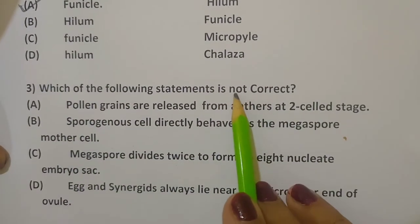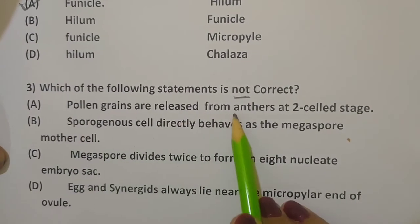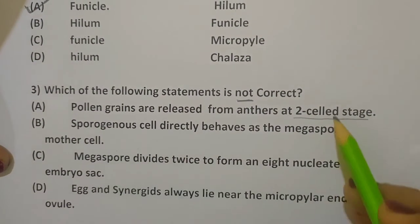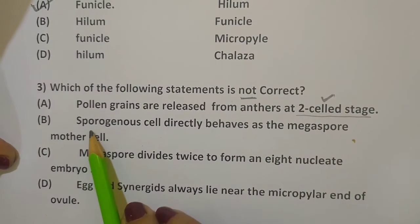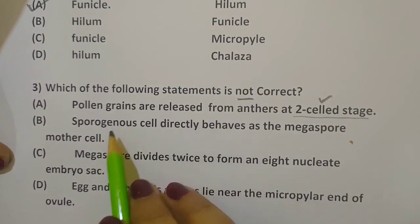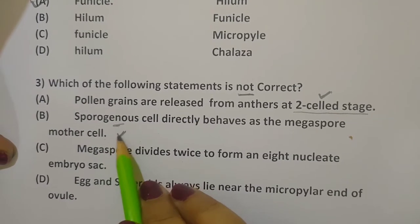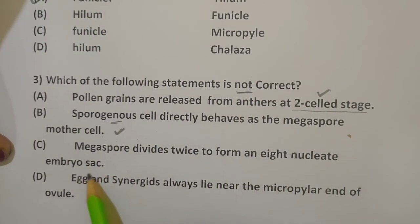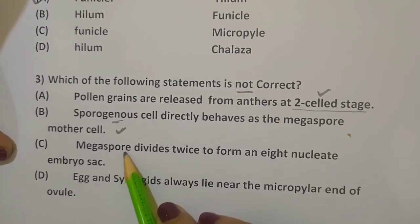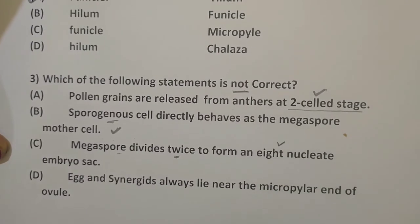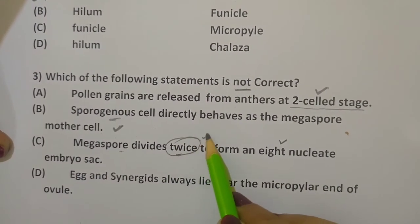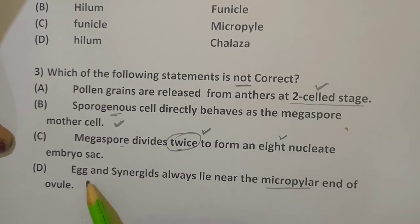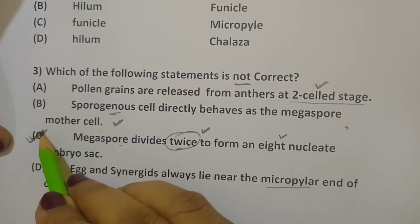Next question: Which of the following statements is not correct? First: pollen grains are released from the anther at the two-cell stage — this is correct, as in most angiosperms pollen grains are released at the two-cell stage. Second: sporogenous cells directly behave as megaspore mother cells — this is also correct. Third: megaspore divides twice to form an eight-nucleate embryo sac — this is NOT correct, because as we saw, the megaspore divides three times to form the eight-nucleate embryo sac. Fourth: egg and synergids always lie near the micropylar end — this is correct. So the incorrect statement is the third one.